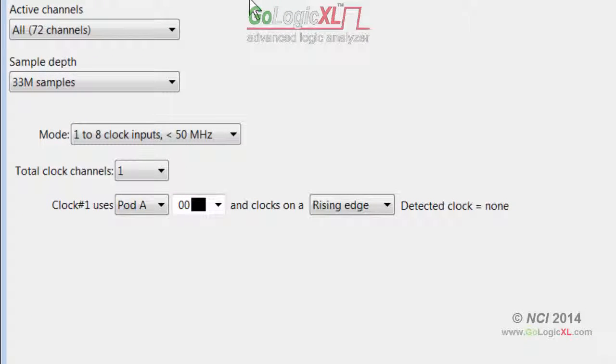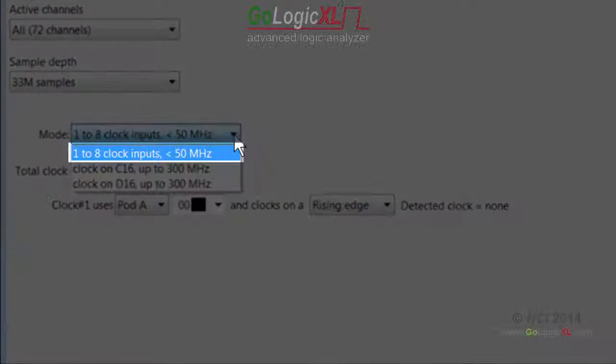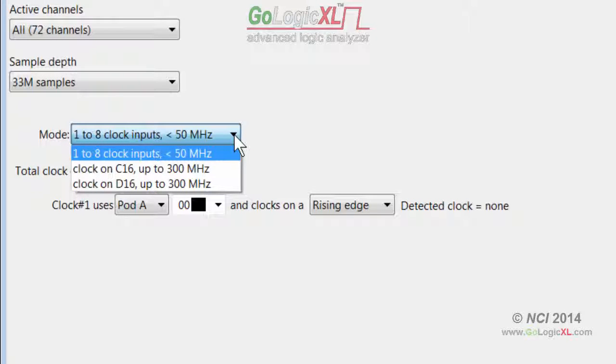The GoLogic XL offers two operating modes for state analysis. The first mode allows one to eight clocks. This mode also allows any channel to be connected to the clock signal. However, the maximum clock frequency is relatively slow compared to the other state analysis option.